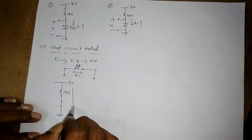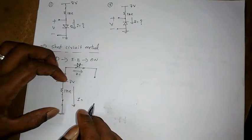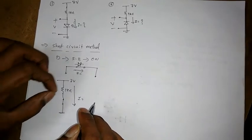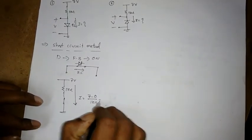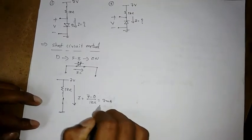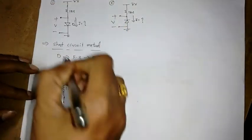So if I find the current here. So current is what voltage difference between, potential difference between these two terminals and the resistor. So 7 minus 0 by 1 kilo which is 7 milliampere.